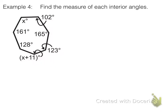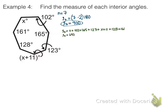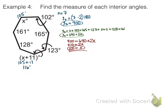Next: we've got all different angles again, so we do the same thing — pause it and try it yourself, then come back. n equals 7, so seven minus two times 180 gives us 900 degrees for all of them. We add all our angles up and simplify to get 690 plus 2x. Setting equal: 900 equals 690 plus 2x. Subtract 690, divide by 2, and we get x equals 105. Substituting in: 105 plus 11 gives 116 for that angle, and the other missing angle is simply 105.